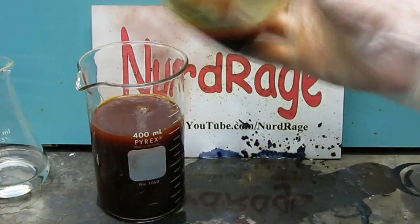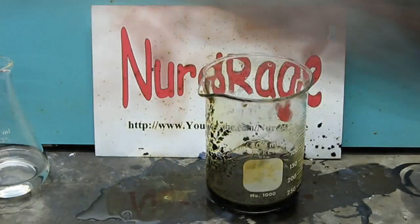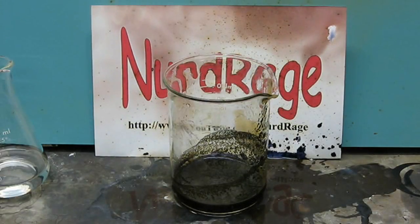The iodine is at the bottom so simply pour off the excess liquid. And now we have a wet slurry of elemental iodine.